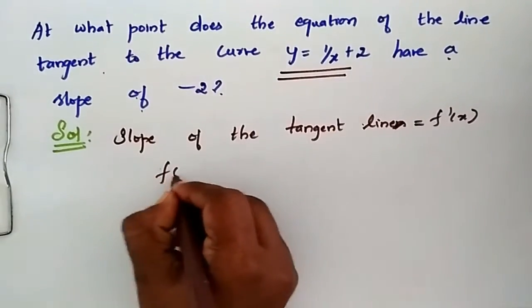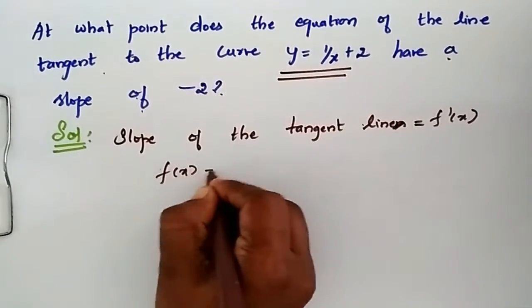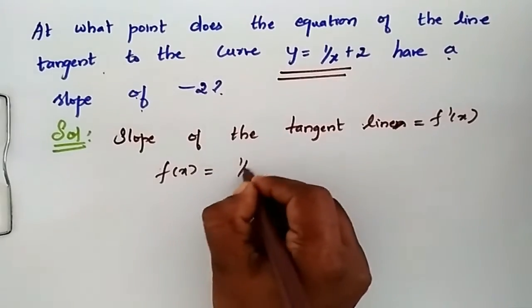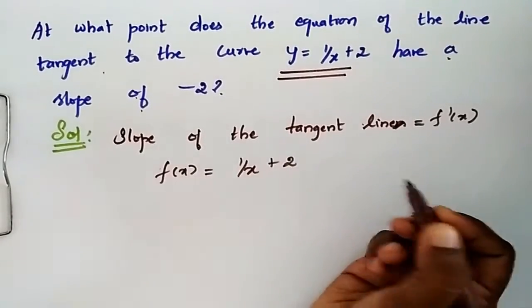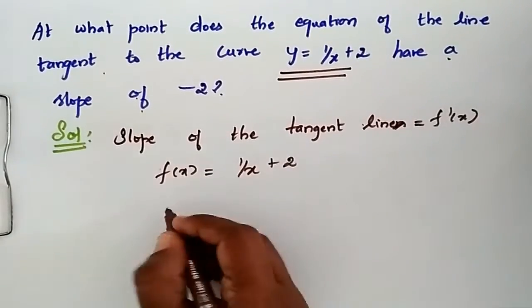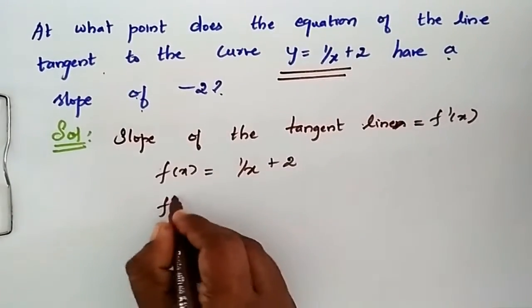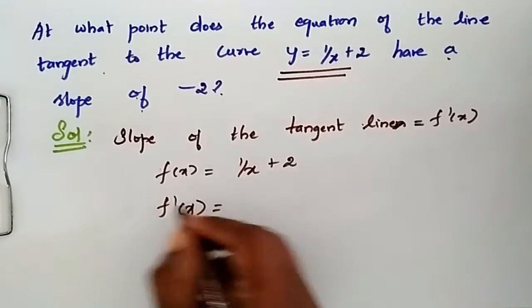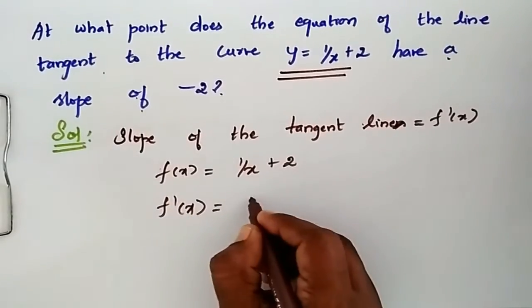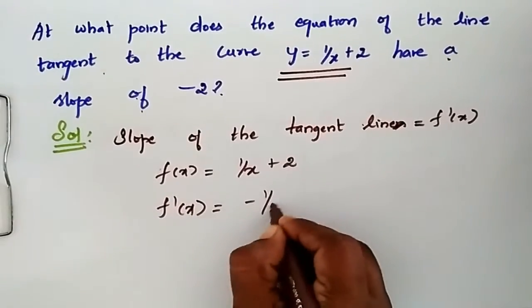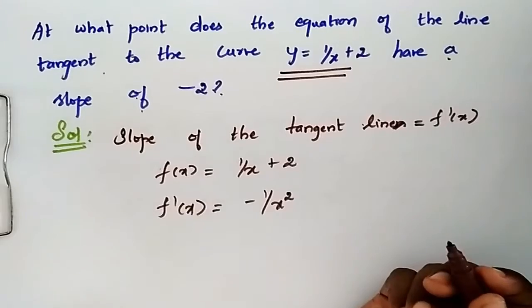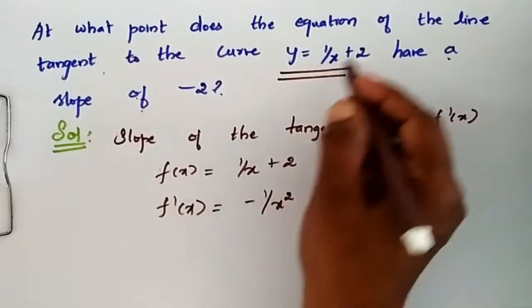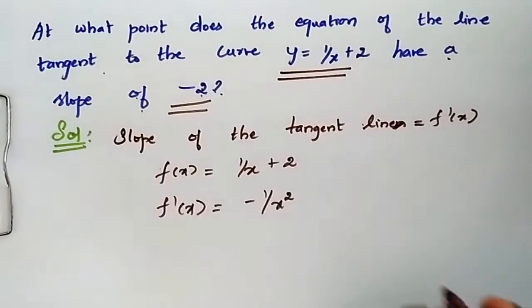So, f(x) = 1/x + 2. Now, f'(x) is the derivative. The slope of 1/x — so how about when the slope of x is equal to minus 2?